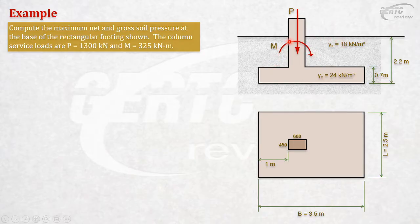Are you thinking of using P over A plus/minus 6M over LB squared? Maybe some of you are thinking that's the formula. But look - what we're analyzing here is the footing, not the column. The loaded area is the footing. The moment must be from the center of the footing.